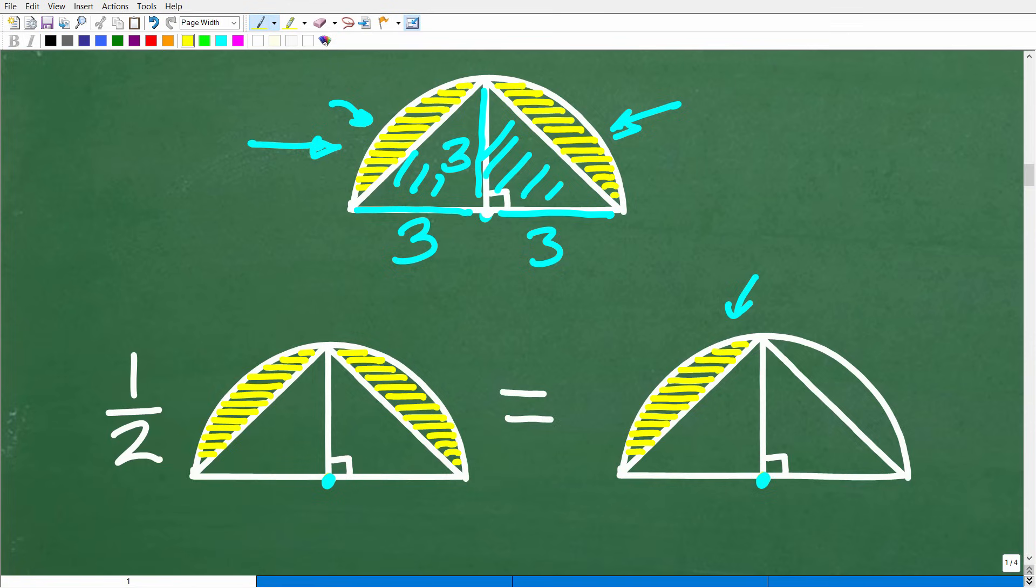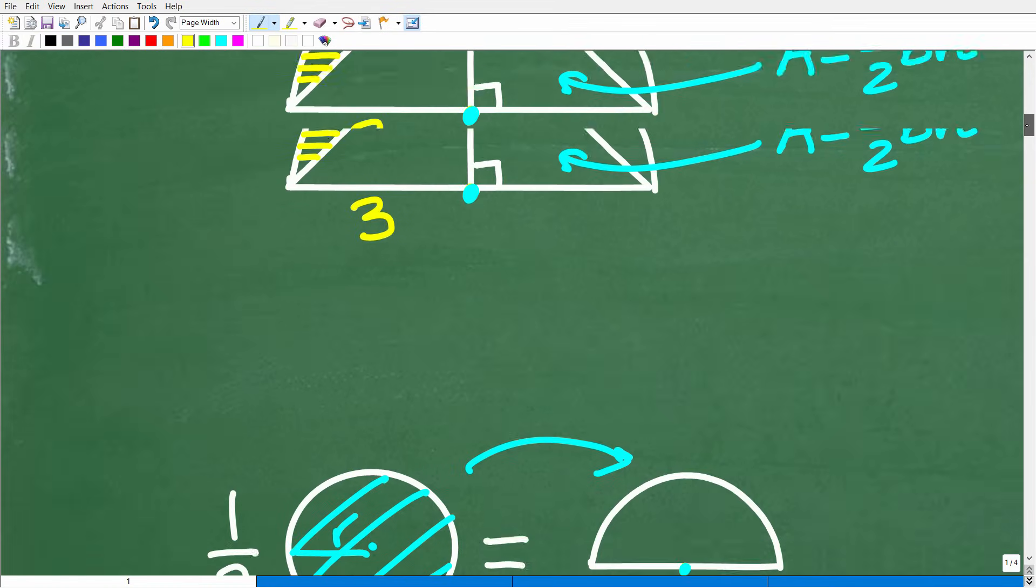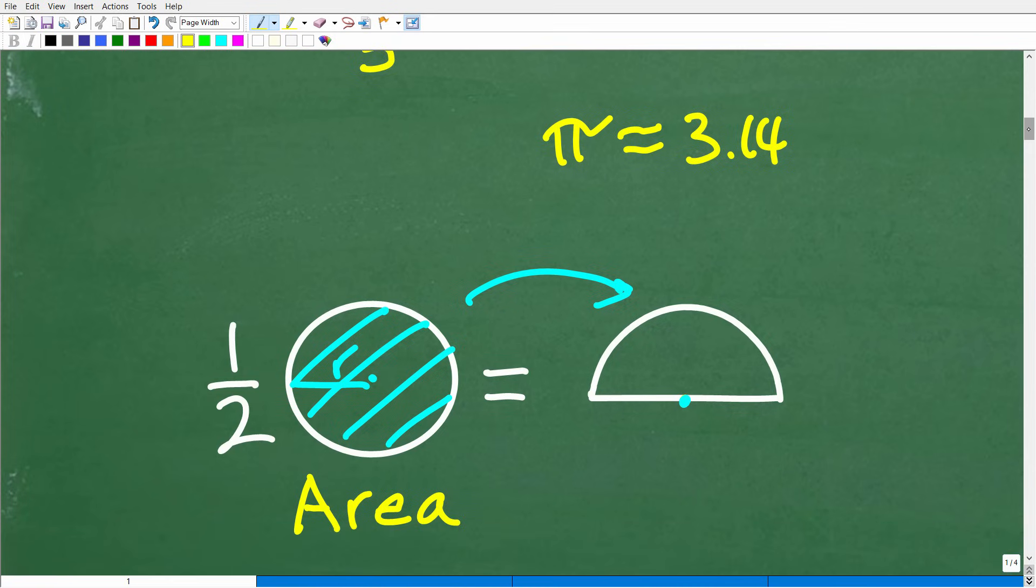We're going to be dealing with pi here. Our formula for the area of a circle is pi r squared. I'm going to hold off on replacing pi with a decimal approximation of 3.14 till the very end. I suggest you do the same. It just makes our life a lot easier.